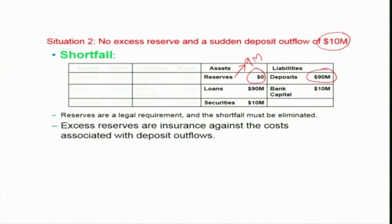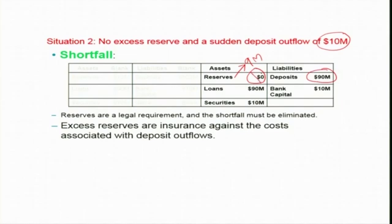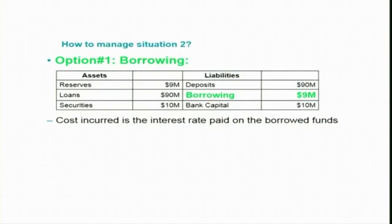Excess reserves are normally kept as insurance against the cost associated with deposit outflow. So how to manage this situation? The bank needs to raise $9 million to meet the reserve requirement. Option one: the bank will borrow from other banks or from the central bank itself. The cost involved is the interest rate paid on the borrowed funds.